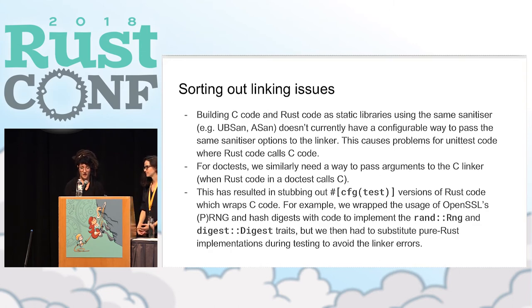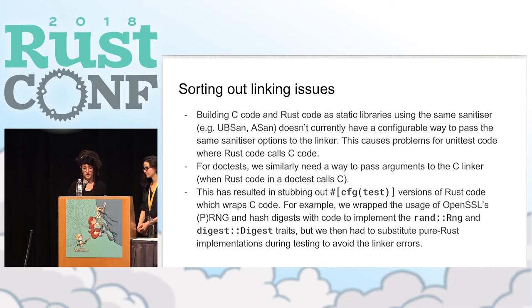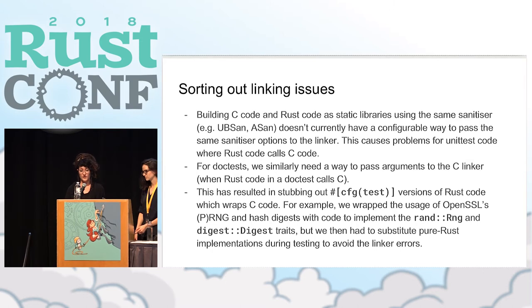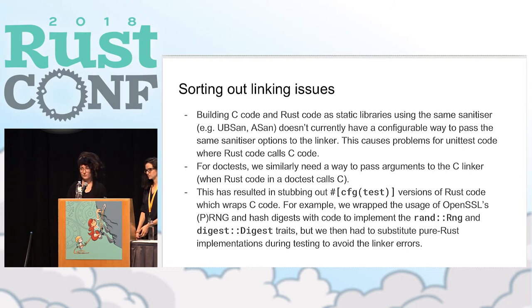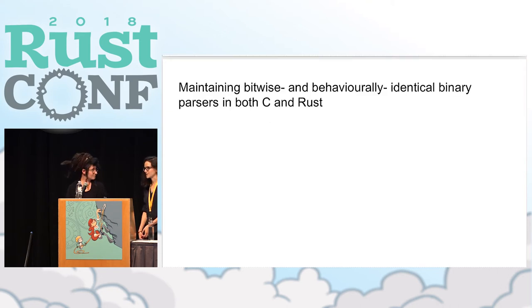This resulted in us stubbing out test versions of Rust code in pure Rust — essentially re-implementations of code which wraps C code. For example, I wrapped our usage of OpenSSL's PRNG and hash digests with code to implement the RandRng and Digest traits. But we then had to substitute pure Rust implementations during testing to avoid the linker errors, because higher-level cryptographic implementations like signatures calling this OpenSSL-wrapping code would bring the linker issues back again. It's the ticket no one wants to touch.